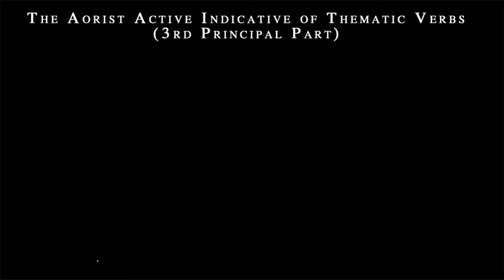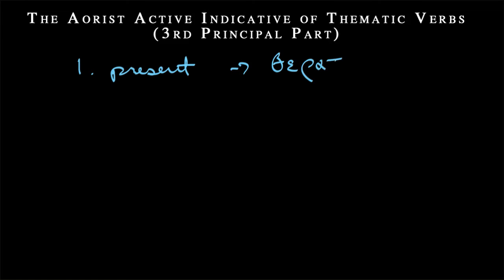Hi again, everyone. We're moving at a breakneck pace because we're already learning what's going to be our fourth tense. Remember that we started off with the present tense, which was progressive. Using therapello as our example — meaning 'honor' or 'worship' — so we had 'I honor,' 'I worship,' 'I am honoring,' 'I am worshiping.' It's present and progressive in its aspect.